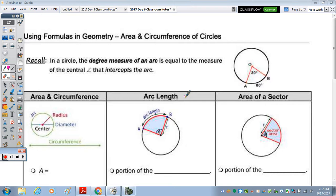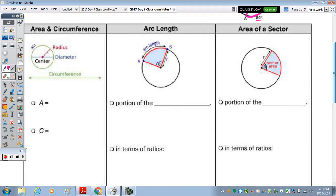In today's notes, we're going to continue using formulas in geometry, but we're going to specifically look at the area and circumference of a circle. Recall that in a circle, the degree measure of an arc is equal to the measure of the central angle that intercepts the arc. So this central angle right here, AOB, intercepts arc AB. And as you can see, their measures are equal. In the first column of the table, let's review the area and circumference formulas.